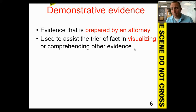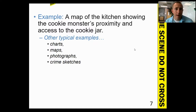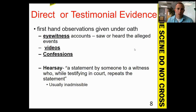Demonstrative evidence is used to supplement a prosecution or defense. It's used by lawyers and attorneys to help a judge or jury visualize what happened at a crime scene. These can be things like maps, drawings, sketches, and photographs of the actual crime scene. An example would be if someone drew a map of the kitchen showing how close Cookie Monster was to the cookie jar. This is the type we'll focus on the least in this class.